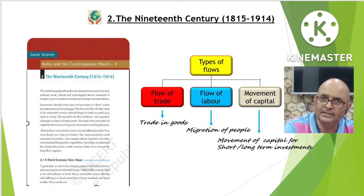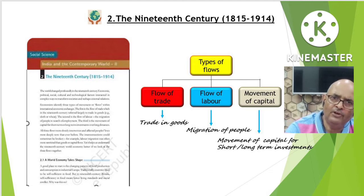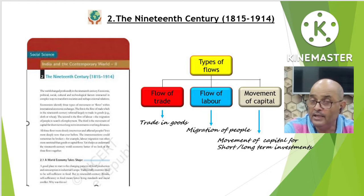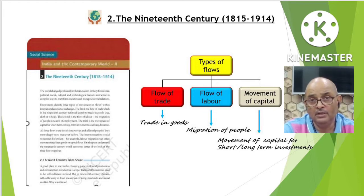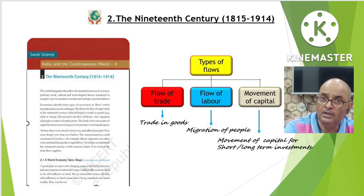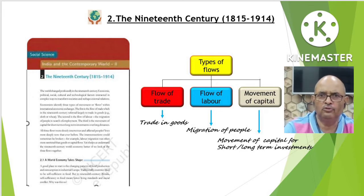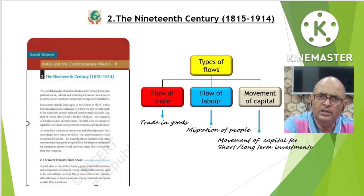Goods were exported from one country and imported by another — just as India exported tea and spices and imported manufactured goods. Flow of labor refers to the migration of labor from one country to another, mainly in search of employment. Flow of capital means movement of capital from one country to another for short-term or long-term investments.